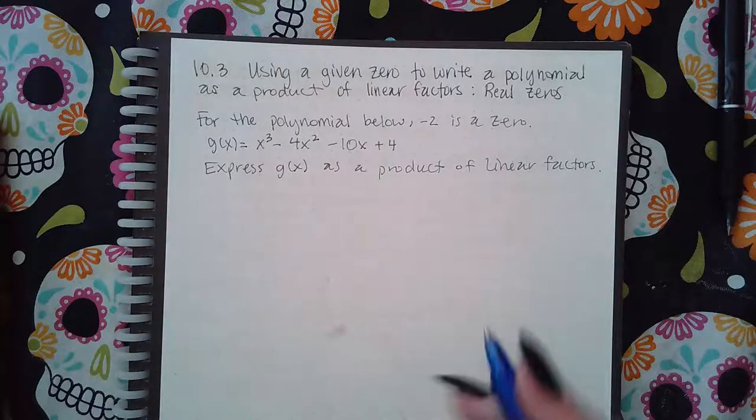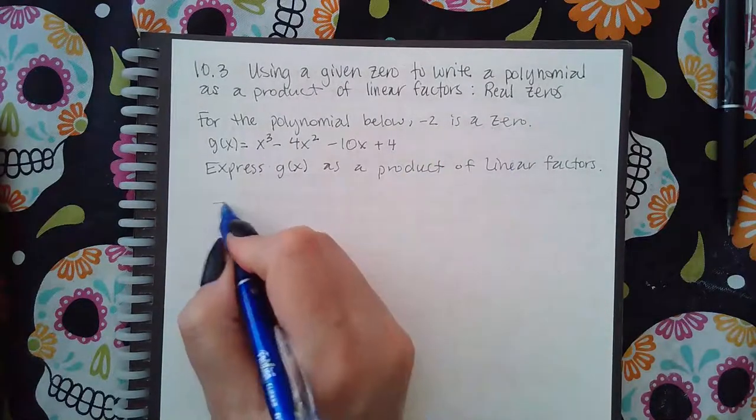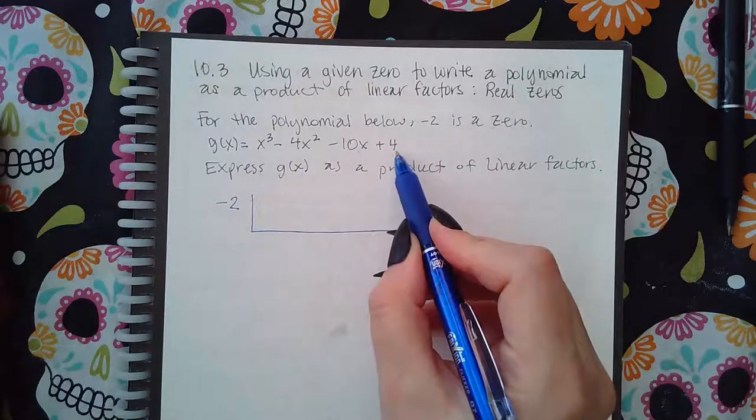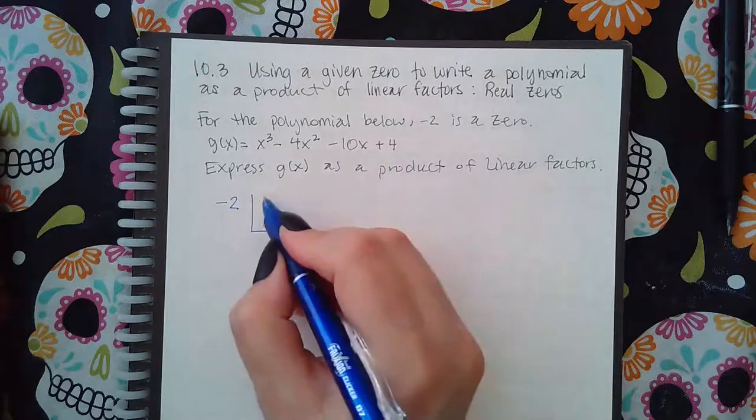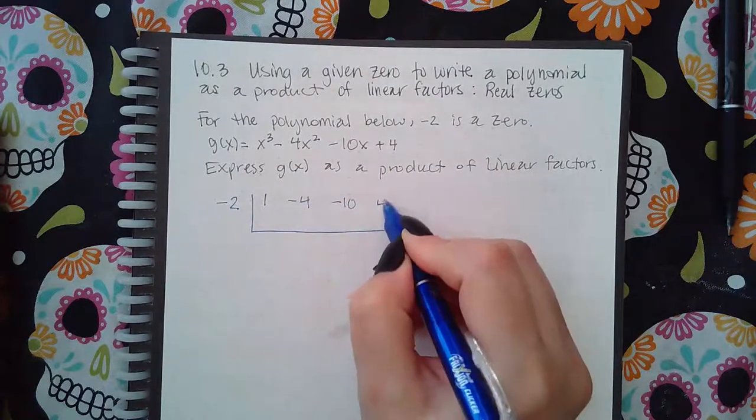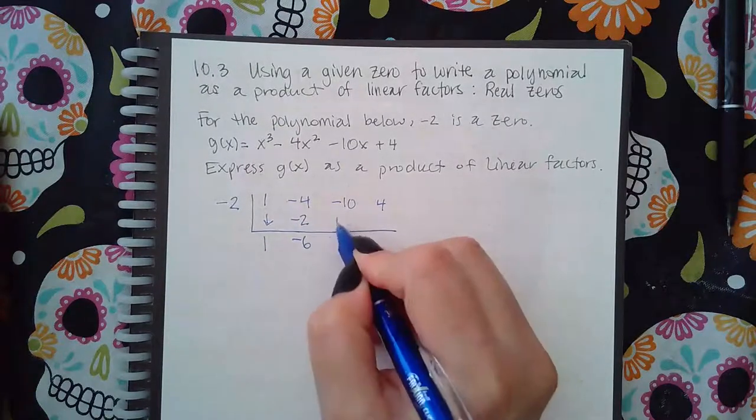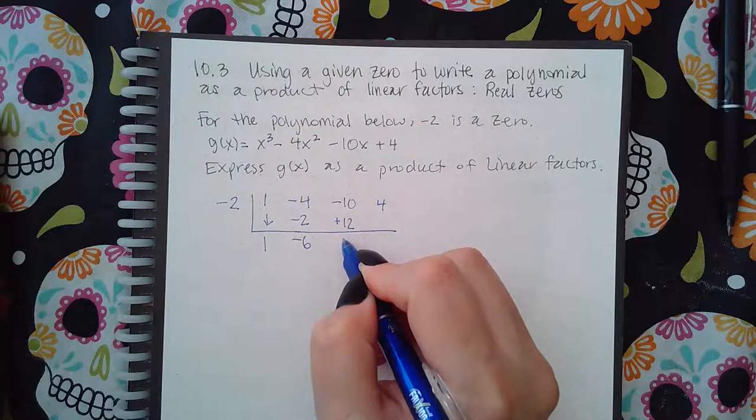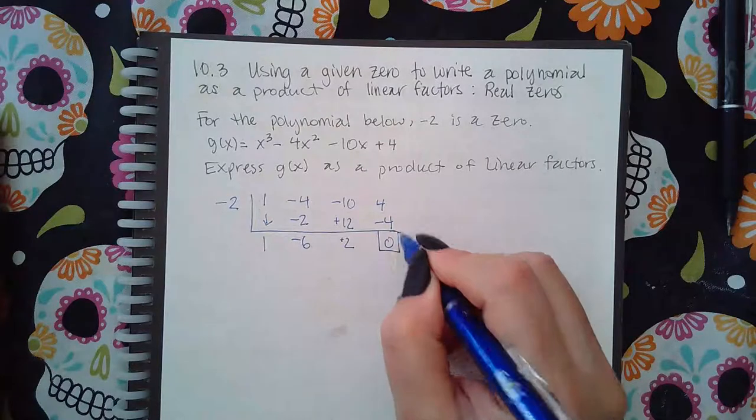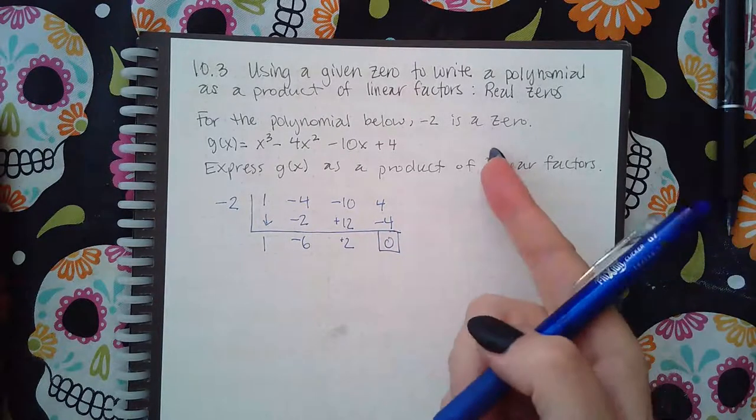So what I do instead is synthetic division. This is k value. And then this is already in that form. I don't have any missing terms, so coefficients only. And then bring down and get one, negative two, negative six, positive 12, positive two. And I get negative four, and then zero. That's my remainder, which is what should be the remainder if it's telling me it is a zero.